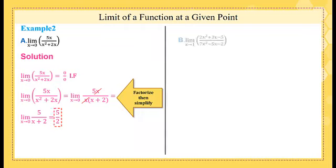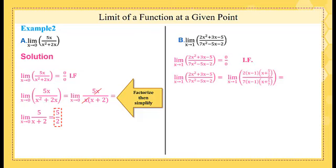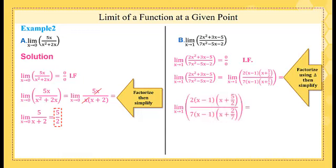Another example. The limit of (2x² + 3x - 5) over (7x² - 5x - 2) as x tends to 1. First, by substituting, we'll get 0 over 0. Now, we have here two secondary equations. By factorizing them, then simplifying (x - 1) by (x - 1), you'll get the final result, which is 7 over 9.